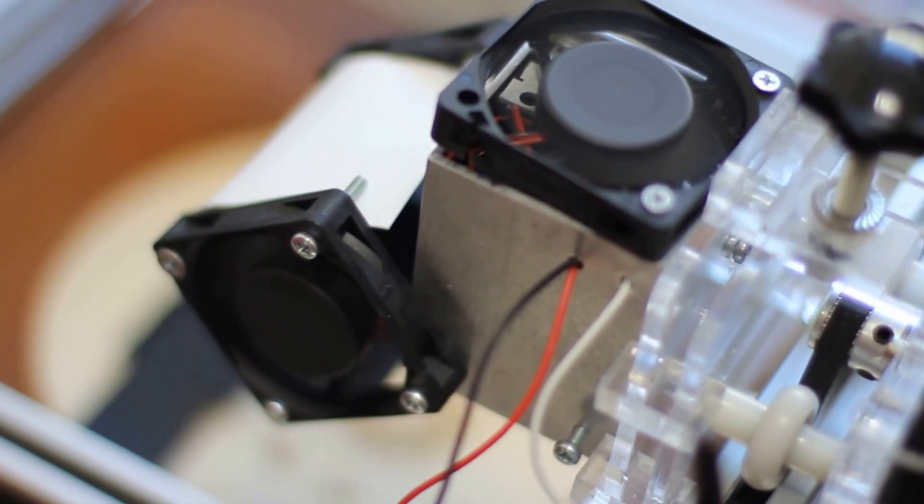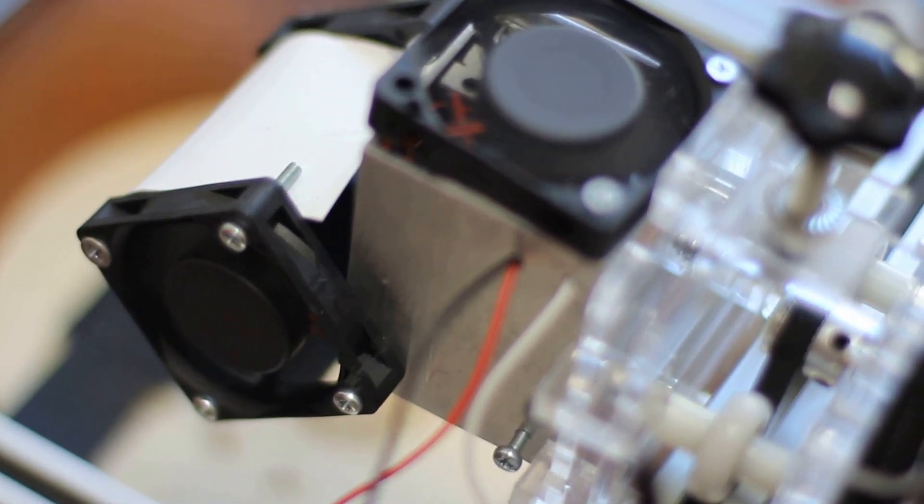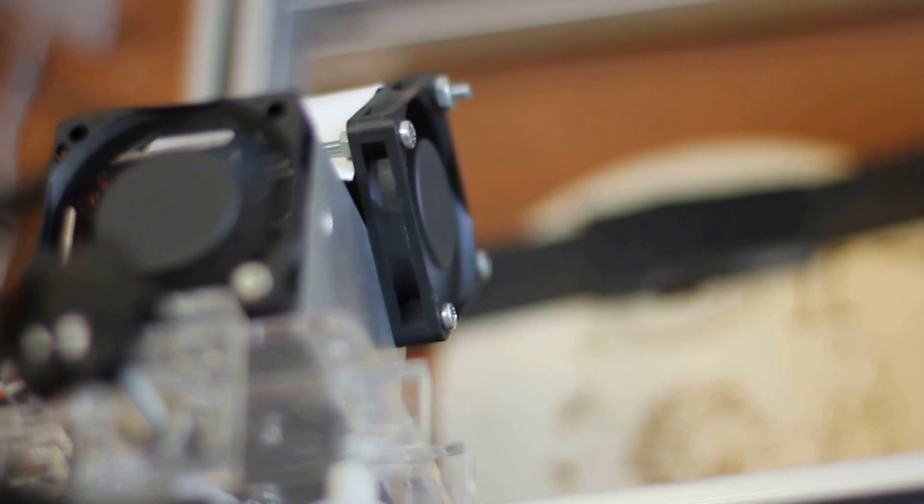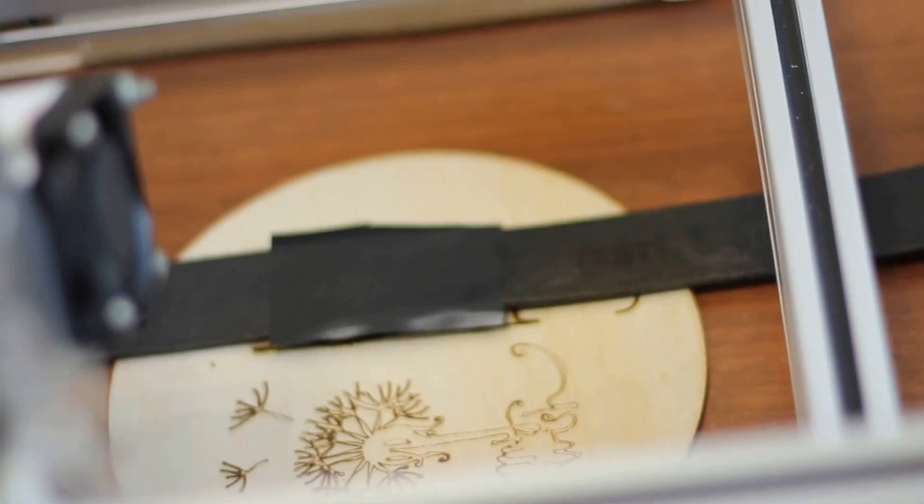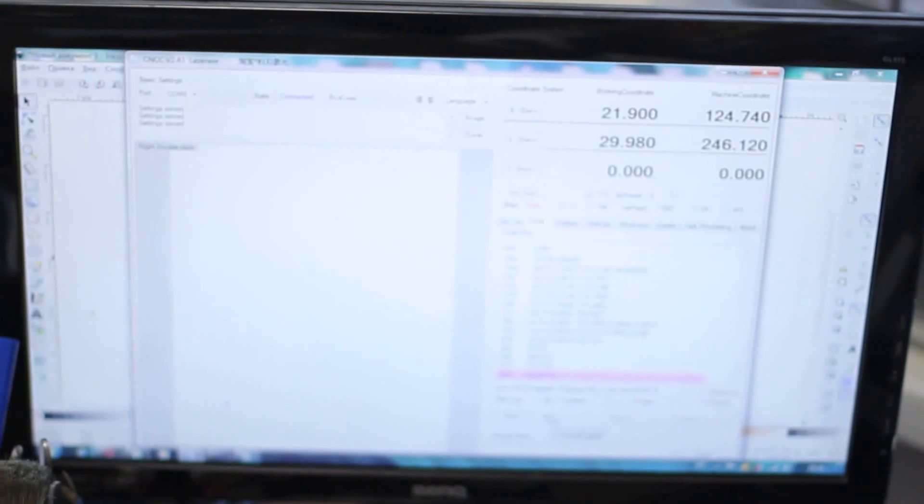We put it on the worktop of our DIY engraving machine. This is our 8-watt diode laser, as you can see, with two additional coolers on the left and on the right. Everything is ready.